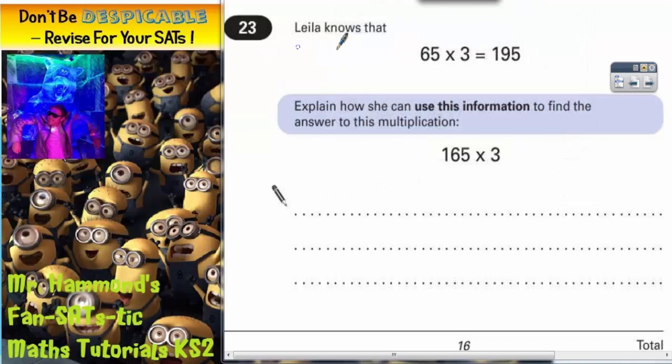Question 23. Layla knows that 65 multiplied by 3 is 195. Explain how she can use this information to find the answer to this multiplication: 165 multiplied by 3.